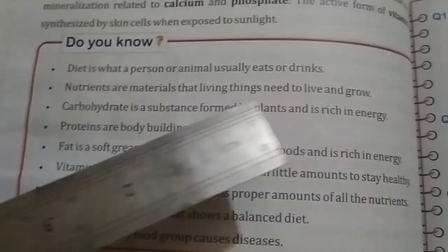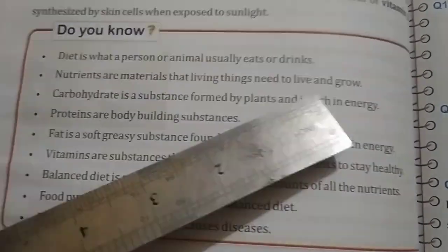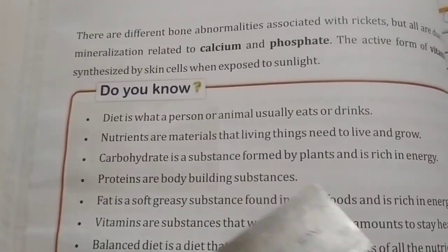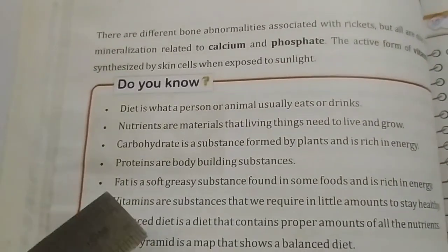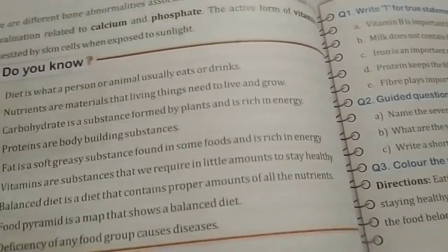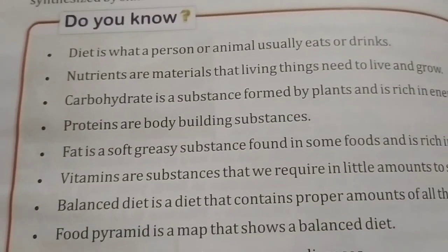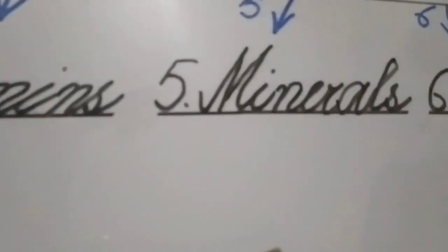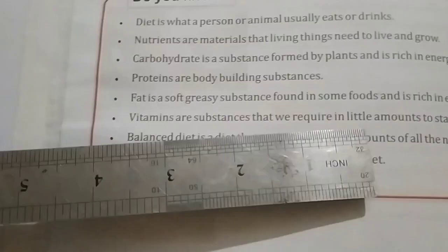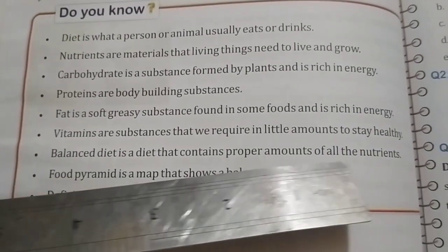Diet is what a person or animal regularly eats and drinks. Nutrients are materials that living things need to live and grow — there are seven nutrient groups. Carbohydrates are formed by plants and are rich in energy. Proteins are the body-building group. Fats are rich in energy and add taste to our diet. Vitamins are substances we require in little amounts to stay healthy. Minerals are elements required by our body in important amounts.